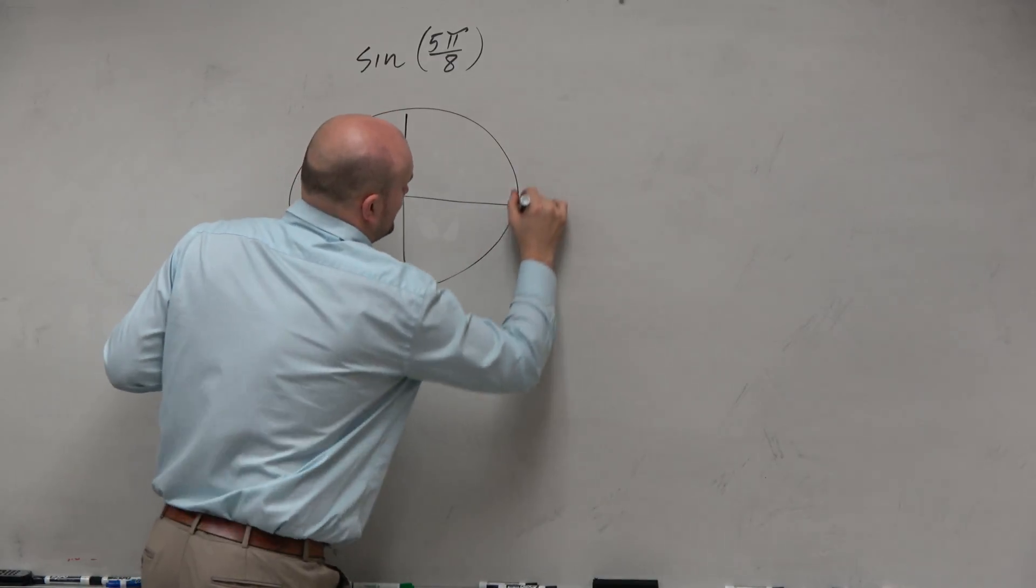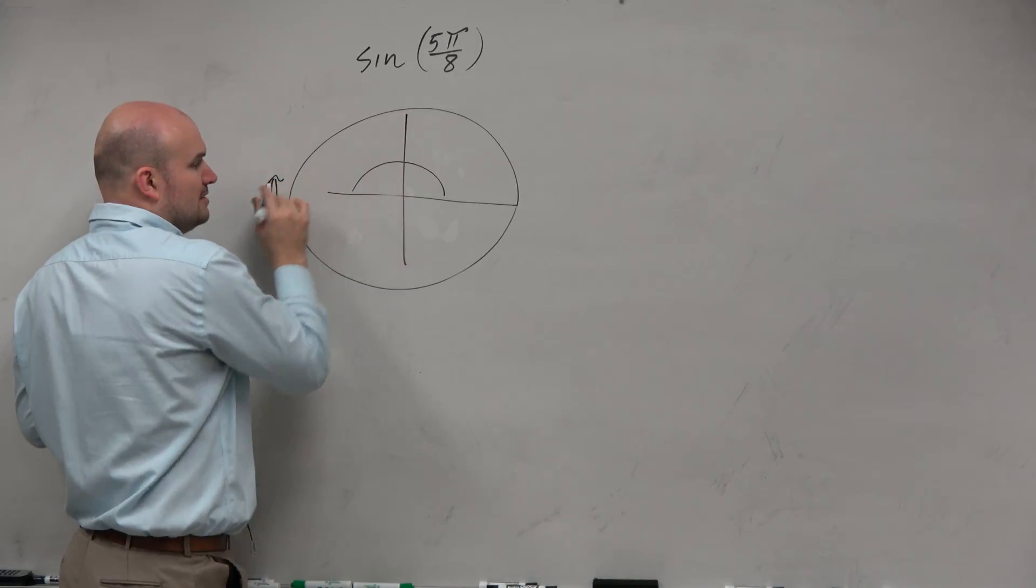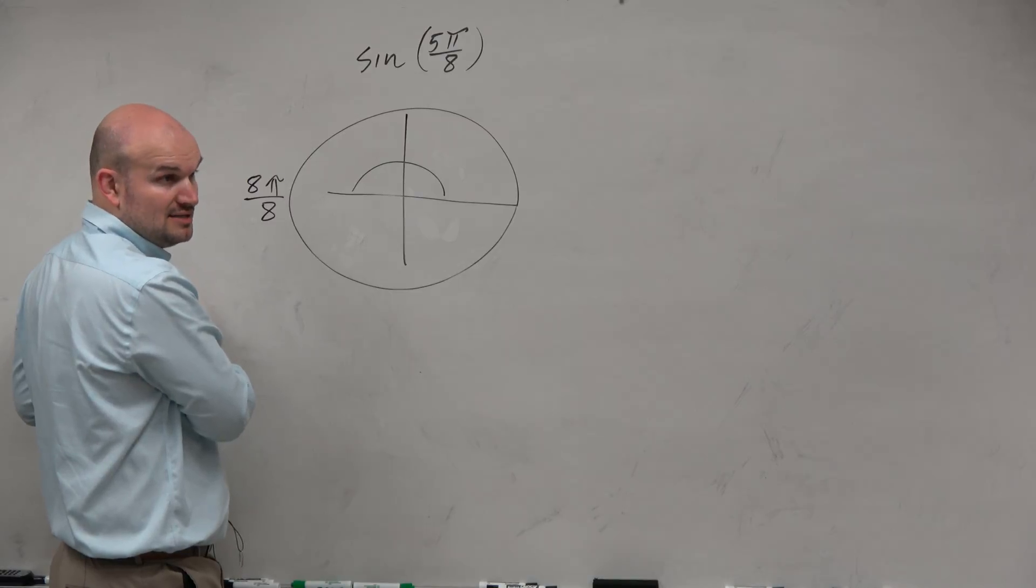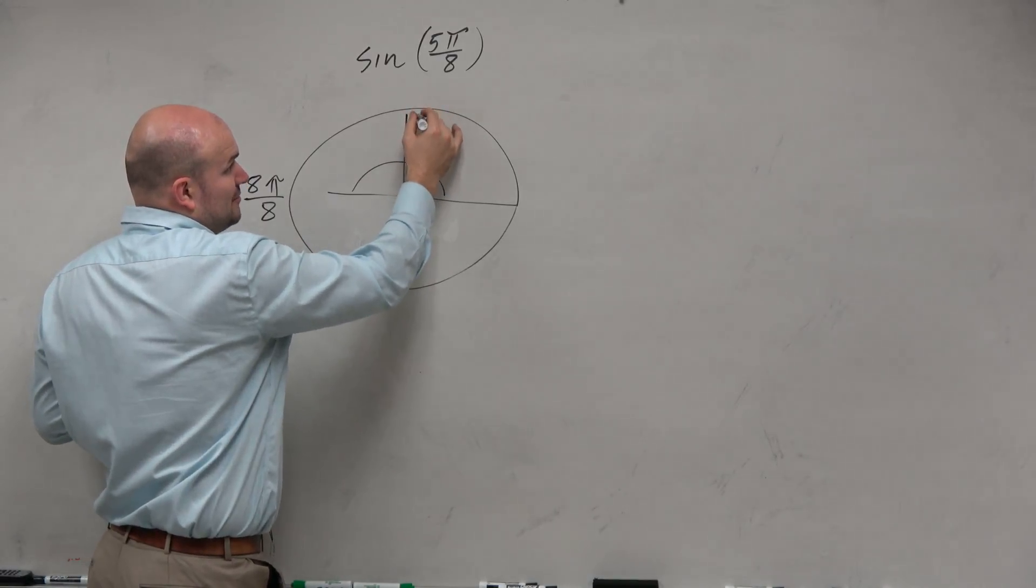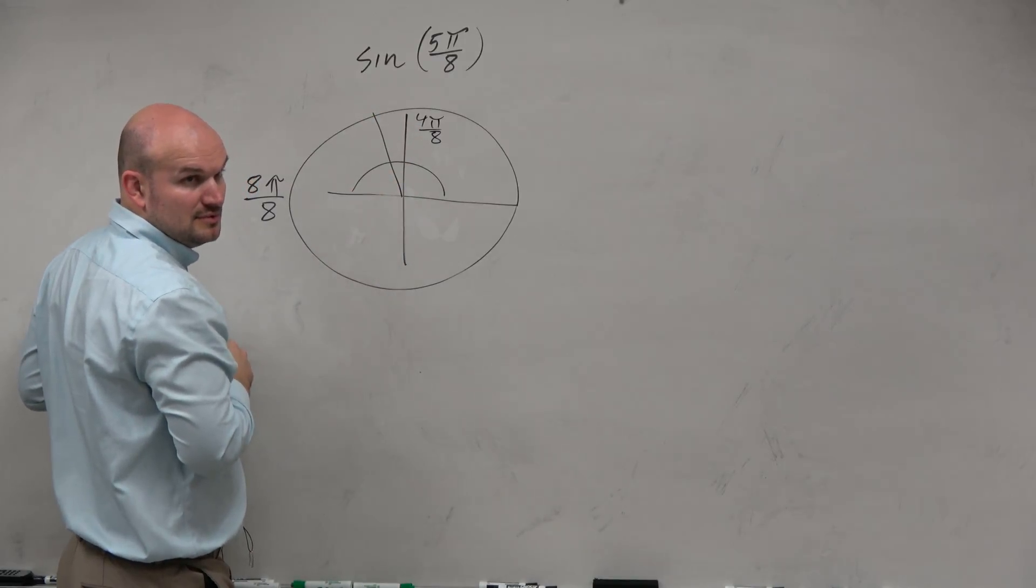Well, if we look at the unit circle, we know halfway around the circle is π. So if we're going for π in terms of 8, that would be 8π over 8, correct? So half of that would be 4π over 8. So we're looking at 5π over 8 right here.